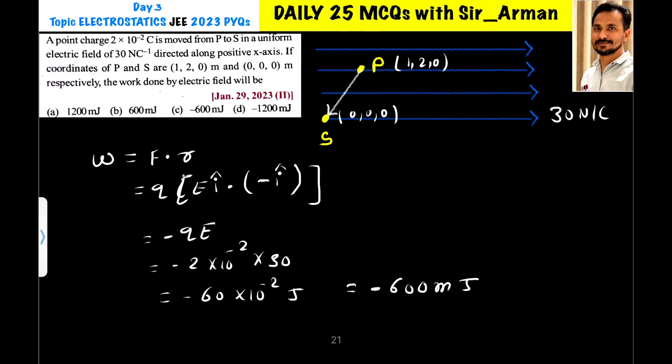A point charge 2 into 10 raise to minus 2 coulomb is moved from P to S in a uniform electric field of 30 newton per coulomb directed along x-axis.